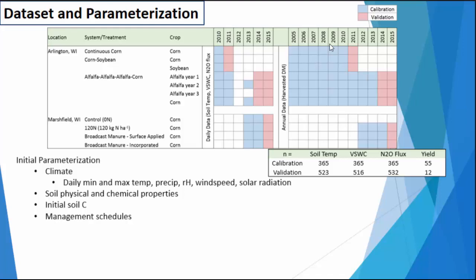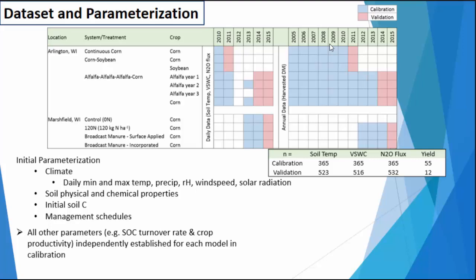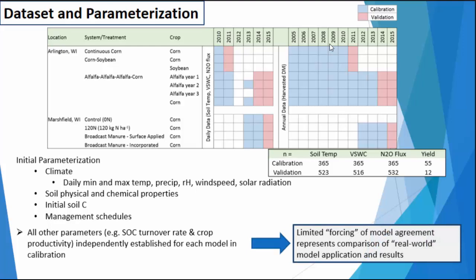This is the data we used to parameterize the models — what was held constant across all three. After that, we allowed individual modelers to parameterize or set model settings as they saw fit, as best practice for their model. We did this because the models are differently constructed, making it impractical to force them all to do exactly the same thing — for instance, with how fast carbon turns over. We also wanted to see how these models performed as if independently applied in real-world conditions, to get an idea of what the error or model performance might be.